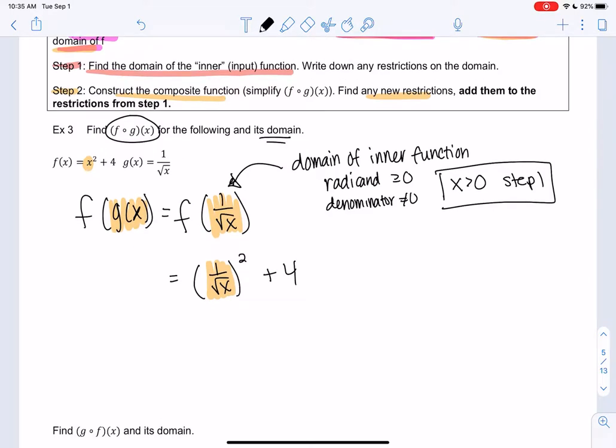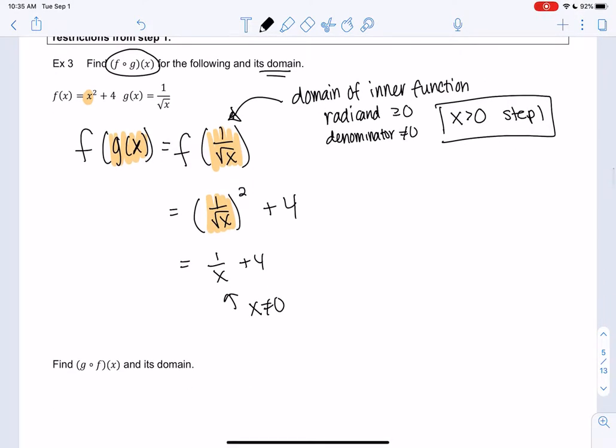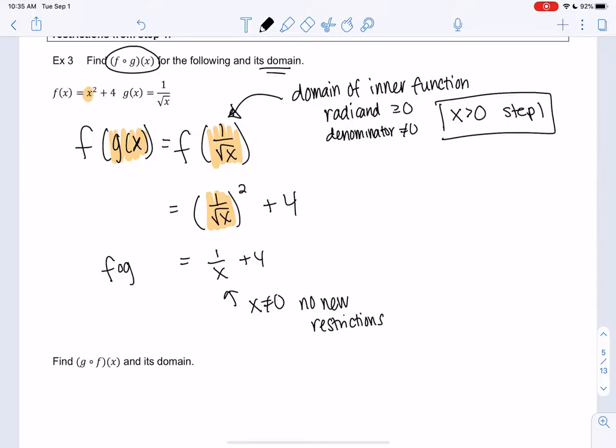So what do we get? 1 over square root x squared would be 1 over x plus 4. And that's pretty much it. Are there any new restrictions? The domain now would be x can't be 0. But that was already restricted, so there's no new restrictions. So f(g(x)) is 1 over x plus 4, where x is greater than 0, coming from there.